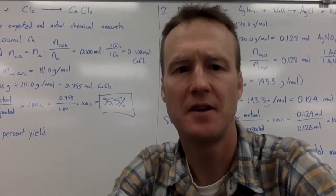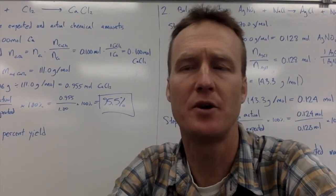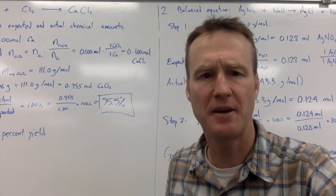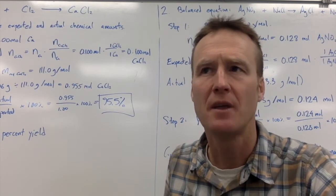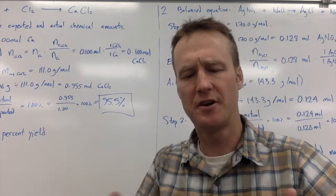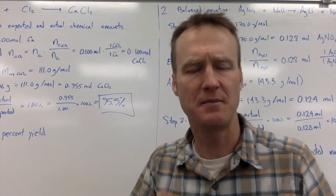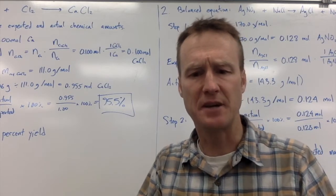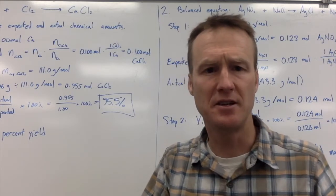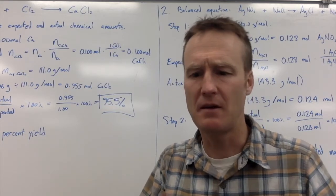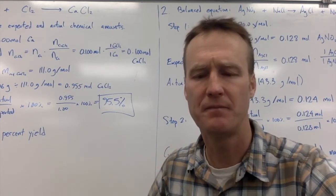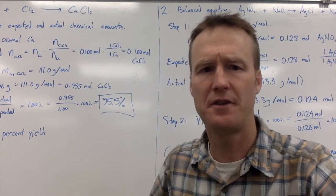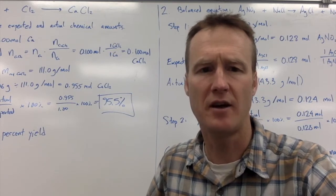Hi there, Chemistry 11. Today we're going to look at percent yield and chemical reactions. What you've looked at so far in examining stoichiometry has really been ideal case scenarios. You're given a mass of some substance and a balanced chemical equation, and you're expected to calculate the expected yield using different ways of finding the chemical amount. The values you get are theoretical—they might not actually happen.